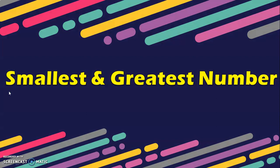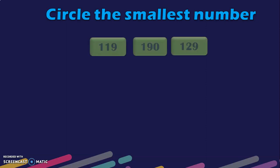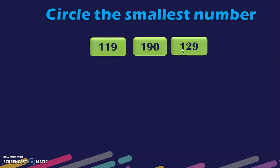Let us move on to the next exercise: smallest and greatest number. Identify and circle the smallest number. Here we have three 3-digit numbers: 119, 190 and 129. First look at the 100s place — all three are 1. Next look at the 10s place: we have 1, 9 and 2. Since 1 is the smallest compared to 9 and 2, 119 is the smallest number.